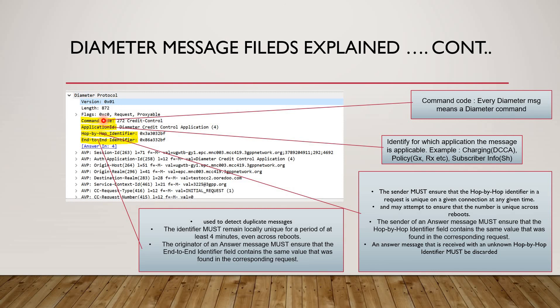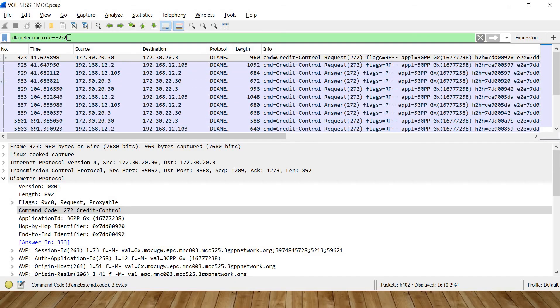Better to remember the command code or you can search it on Google what is the command code for the command which you are searching. And you can put the filter like this: diameter.cmd.code. Diameter is the protocol, .cmd means extension we are giving command, .code means we are giving code not text code.